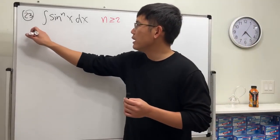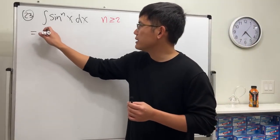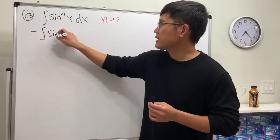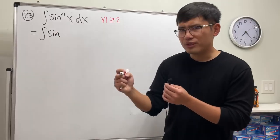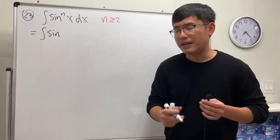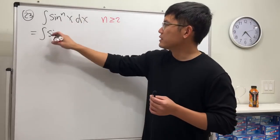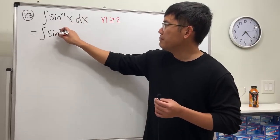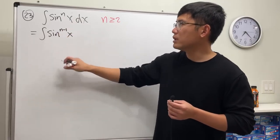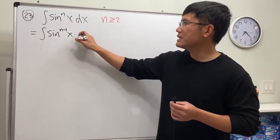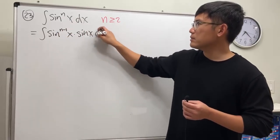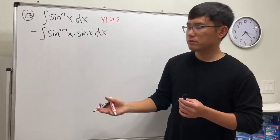Let's have a look at this integral. We have sine to the nth power, and I'm going to take out one of the sine x factors — so we write sine to the n minus one power times sine x dx.